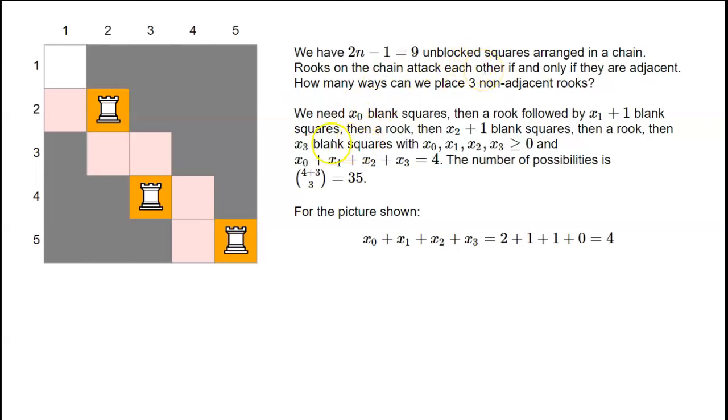Similarly, if we want to place three rooks, we've got x0 rooks at the beginning, which can be zero. Then one plus x1 rooks in this gap, one plus x2 rooks in this gap, and then x3 rooks at the end. For this particular picture, x3 is zero, or if we move that rook there, then x3 would be one. So we've got x0, then x1 plus 1, x2 plus 1, and then x3 blank squares.